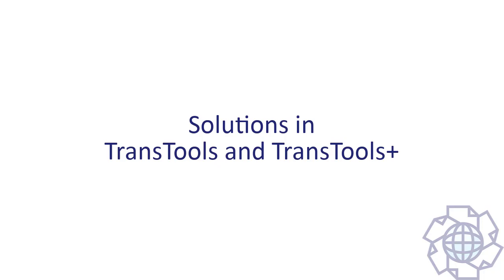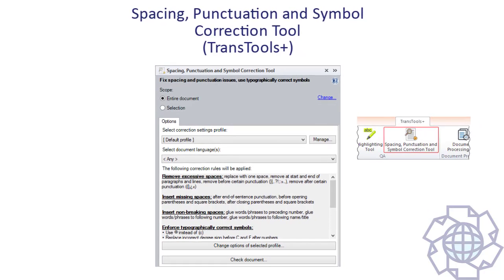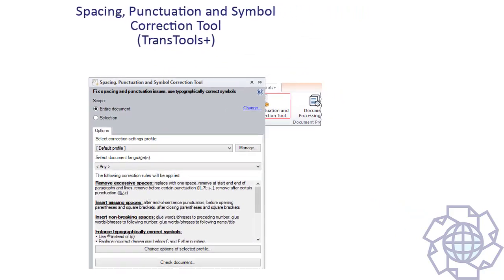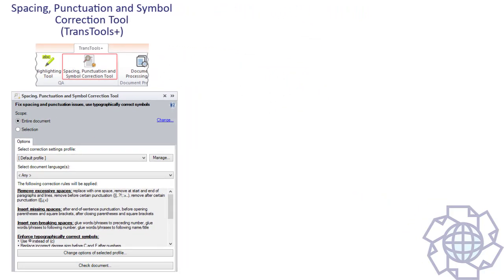TransTools and TransTools Plus offer two solutions to improve the typography of a document. The first tool is called the Spacing, Punctuation and Symbol Correction tool. It is included in TransTools Plus and does several things.